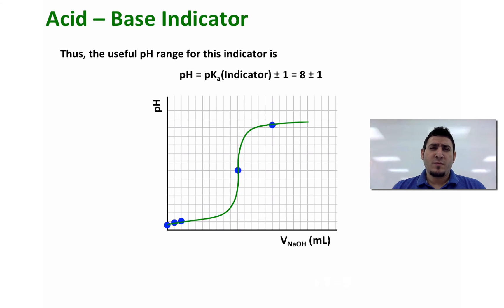So what does it mean? It means that the useful pH for the indicator is going to be pH equal to pKa plus or minus 1, which means that if we have a pH curve for a titration, the change of the color of the indicator or the pH interval of the indicator has to be between pH plus 1 and pH minus 1.